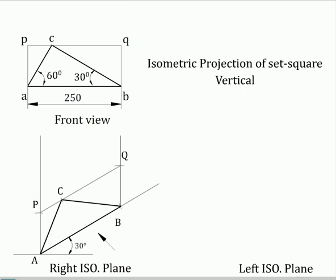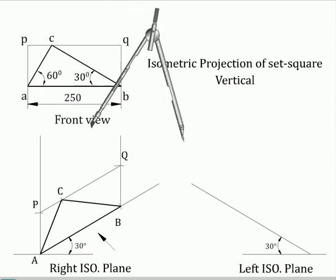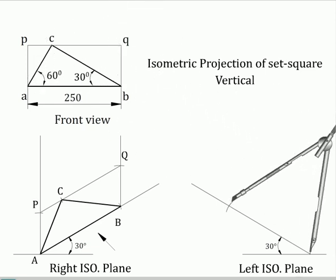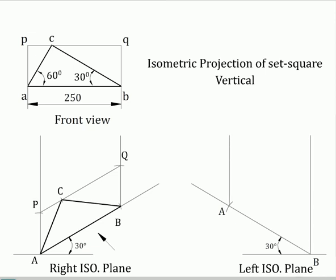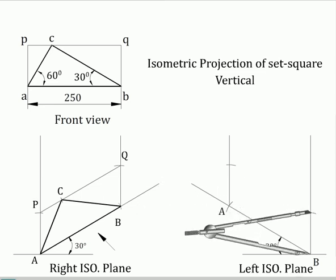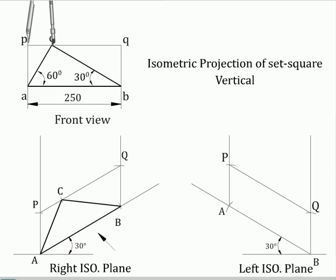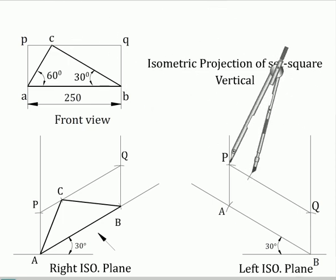Left isometric plane: draw one 30-degree making isometric axis and on it set AB with the measurement 250 mm. Now complete the isometric view of the box ABQP. On QP, mark point C with proper measurement taken from the front view, then join ABCD to complete the problem.